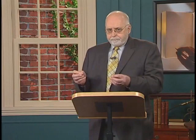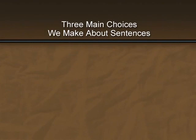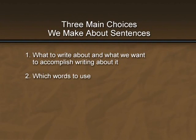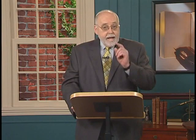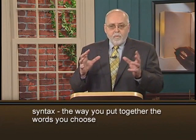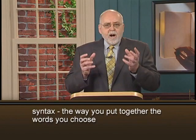Each sentence we write reflects three main kinds of choices we make. Number one: what to write about, and what we want to accomplish writing about it. Number two: which words to use. And number three: what order to put those words in. There's not much that I or any other writing teacher can do to help you choose your subject matter or propositional content. But I can address some important things you'll want to keep in mind as you choose the words you use, particularly the degree of precision in your vocabulary choices. And I can address some even more important concerns in the way you put together the words you choose. We call that order syntax, and the order in which our sentences unfold or hit the reader is entirely within our control.